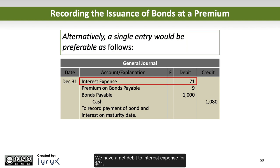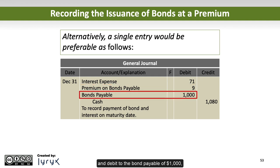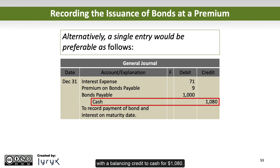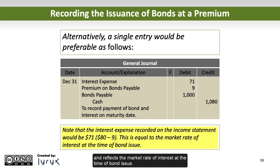These three entries could also be combined into a single entry: a net debit to interest expense for $71, a debit to premium on bonds payable of $9, a debit to bonds payable of $1,000, with a balancing credit to cash for $1,080. Effectively, the net interest expense to Big Dog is $71 — $80 less the $9 premium paid by the purchaser — and reflects the market rate of interest at the time of bond issue.